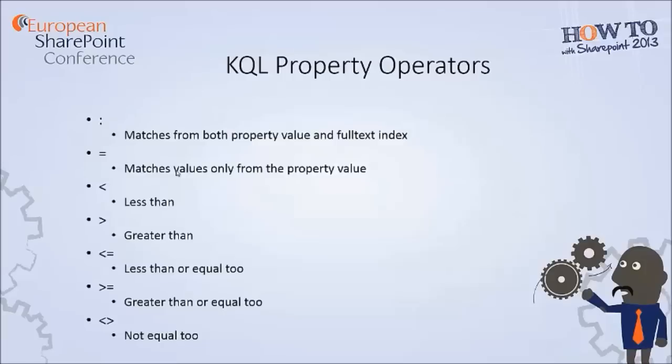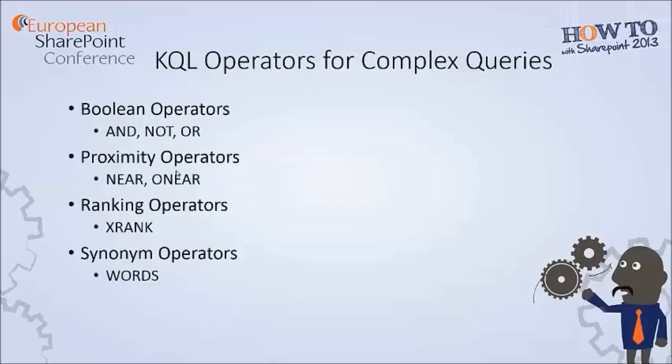Keyword query language property operators are: colon, which defines that it has two matches; equals, which matches values from the property values; less than; greater than; less than or equal to; greater than or equal to; and not equal to. You need to know the data type of the managed property so that you can use the correct operator. Keyword query language operators for complex queries are Boolean operators AND, NOT, OR; proximity operators; ranking operators; and synonym operators.